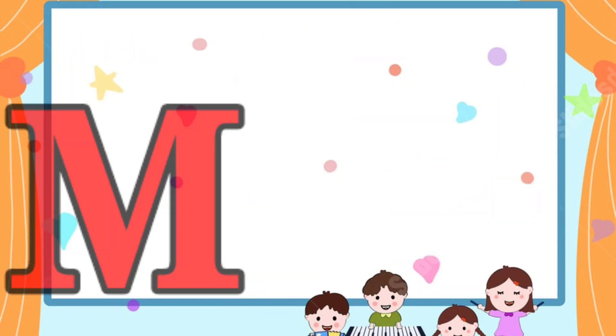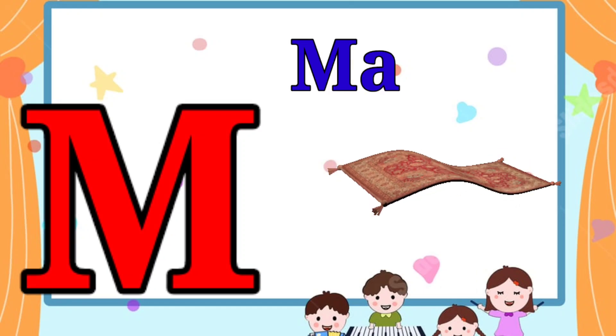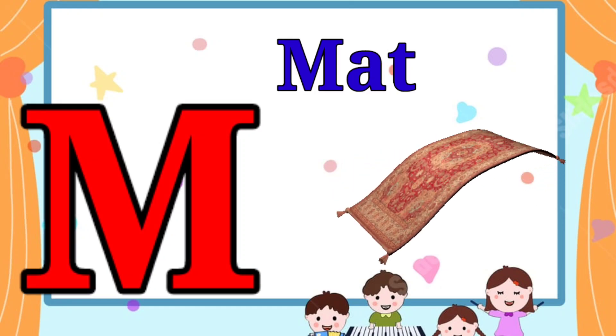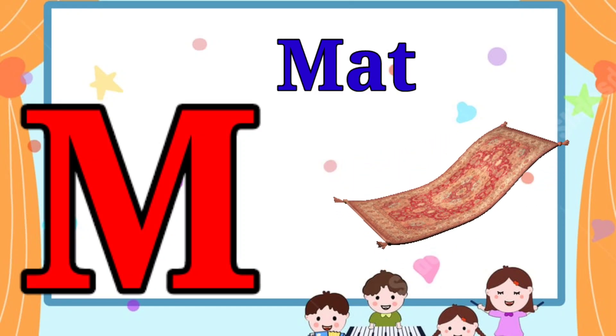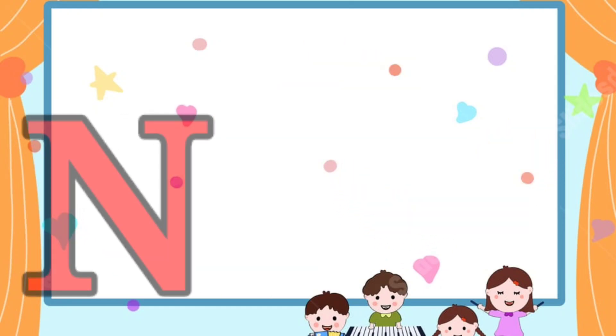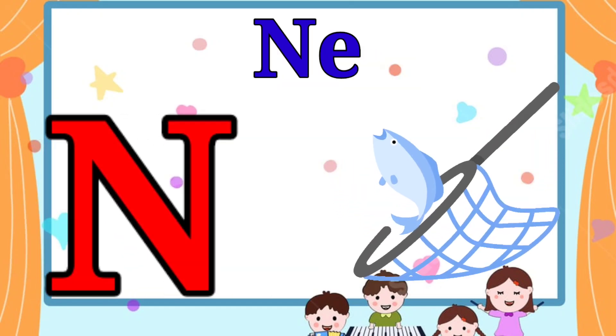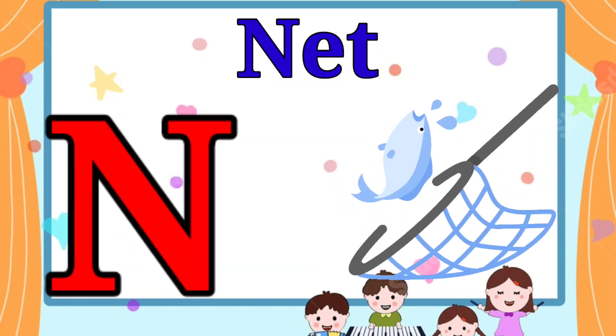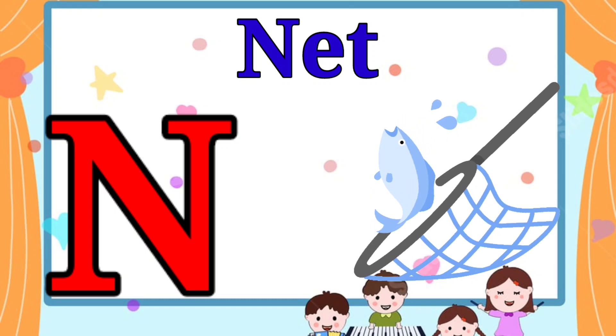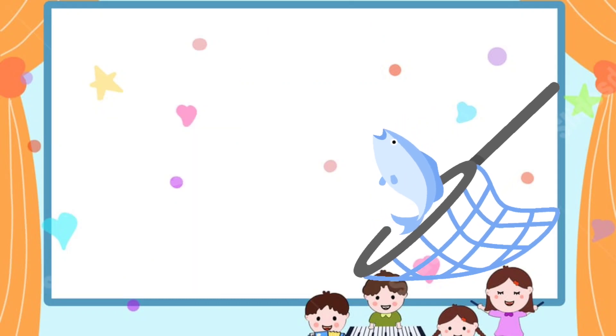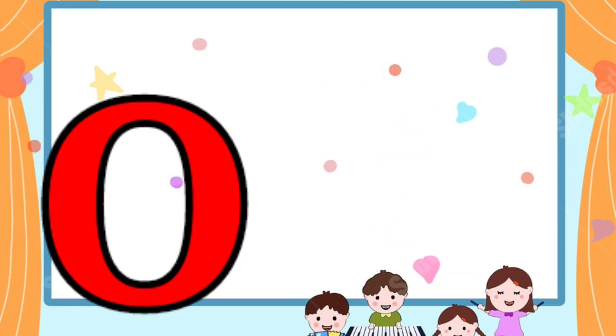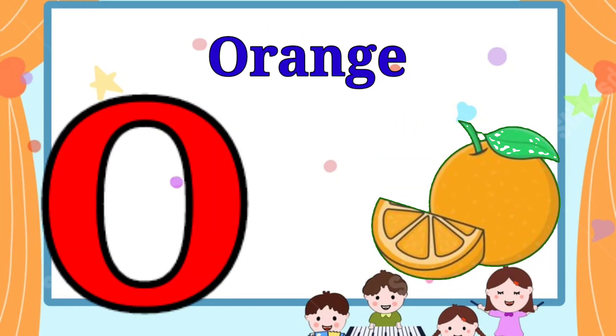M is for mat, m-m-mat. N is for net, n-n-net. O is for orange,